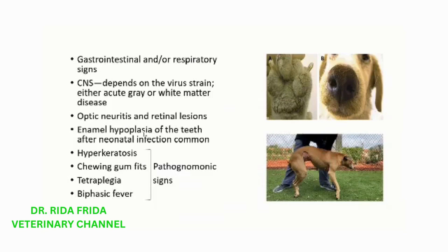One of the most important clinical findings of the disease is biphasic fever. The first peak of the fever is seen 3-6 days after infection and may pass unnoticed. However, the second peak occurs several days later, usually associated with nasal and ocular discharges, depression, and anorexia. Gastrointestinal and respiratory signs then follow, often exaggerated by secondary bacterial infection.